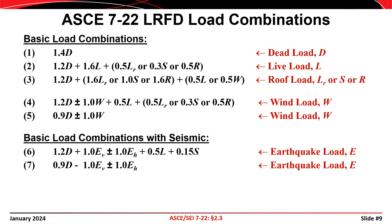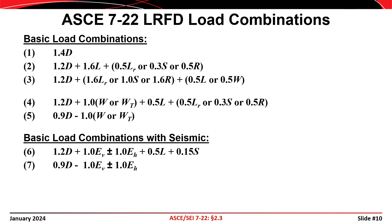Thus, 1.6 times L represents the live load at its maximum lifetime level, but 1.0 times S represents the snow load at its maximum lifetime level. The factors of 0.5 or 0.3 — in the case of snow loads — are used on the companion loads, because the ASCE standard recognizes that nominal load values tend to be biased in excess of their true arbitrary point in time values. It's also worth mentioning that wind loads in combinations four and five are formally written as W or W sub T, indicating that either the conventional wind load W or the wind load associated with a tornado W sub T should be considered.